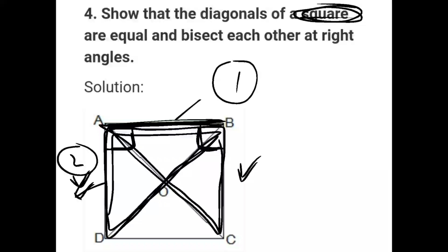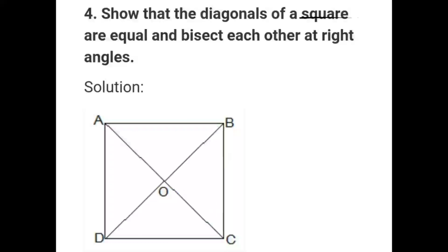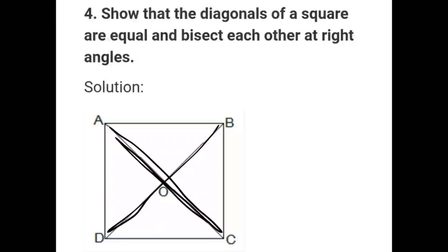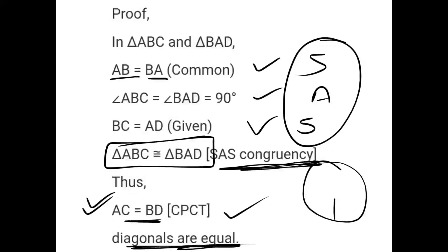So this triangle is congruent to this triangle by SAS rule. If triangles are equal, then each side and each angle are equal. So the diagonal AC equals BD by CPCT. So the first part is proved.